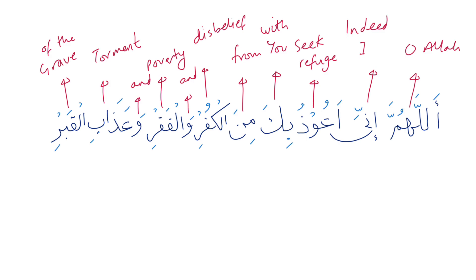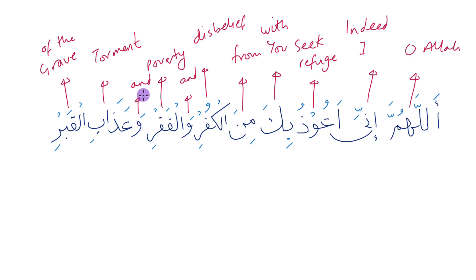So first of all, how do we read this du'a? Allahumma inni a'udhu bika min al-kufri wal-faqri wa'adhaab al-qabr. So: Allah, indeed I seek refuge with you — bika is 'with you' — from, min. Kufr is disbelief, wa is 'and', al-faqr is poverty, wa is 'and', adhaab is torment, and qabr is the grave. That's the overall meaning: Allahumma inni a'udhu bika min al-kufri wal-faqri wa'adhaab al-qabr.